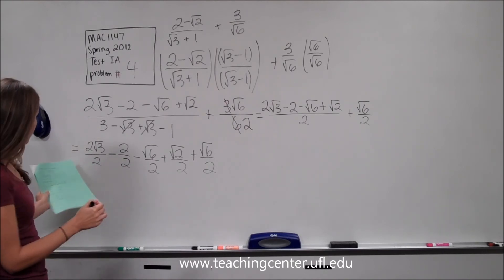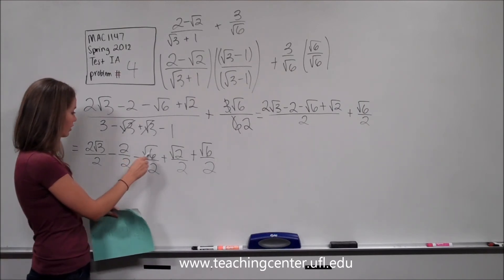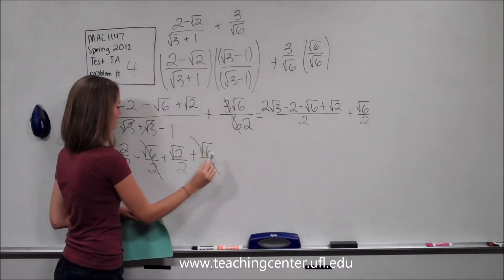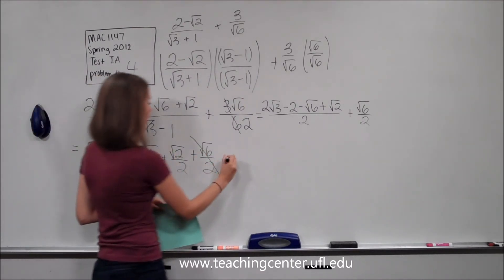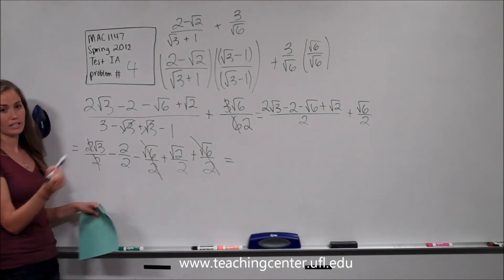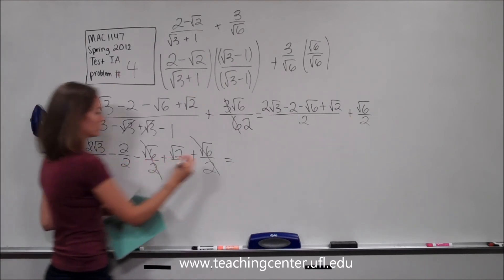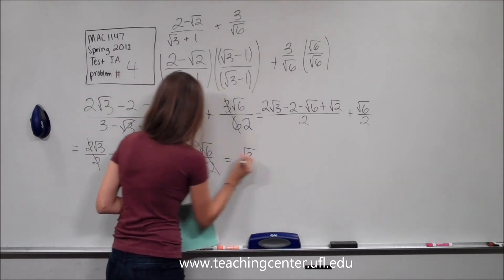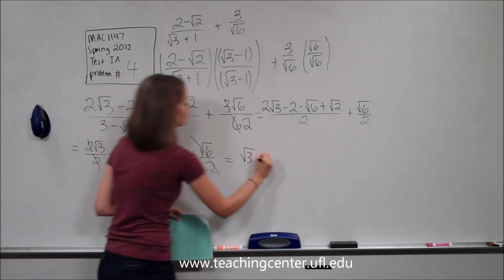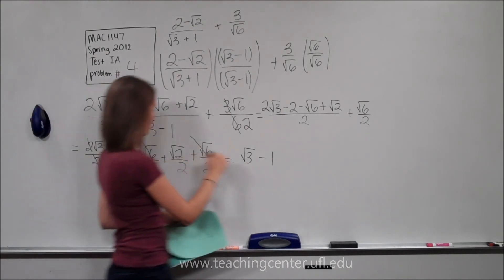From here we can simplify further. We have negative square root of 6 over 2 plus square root of 6 over 2 — those cancel out. Then 2 square root of 3 over 2 — the 2's cancel and we're just left with square root of 3. Then minus 2 over 2, which is just 1, so minus 1. And then plus square root of 2 over 2. So the final answer is square root of 3 minus 1 plus square root of 2 over 2.